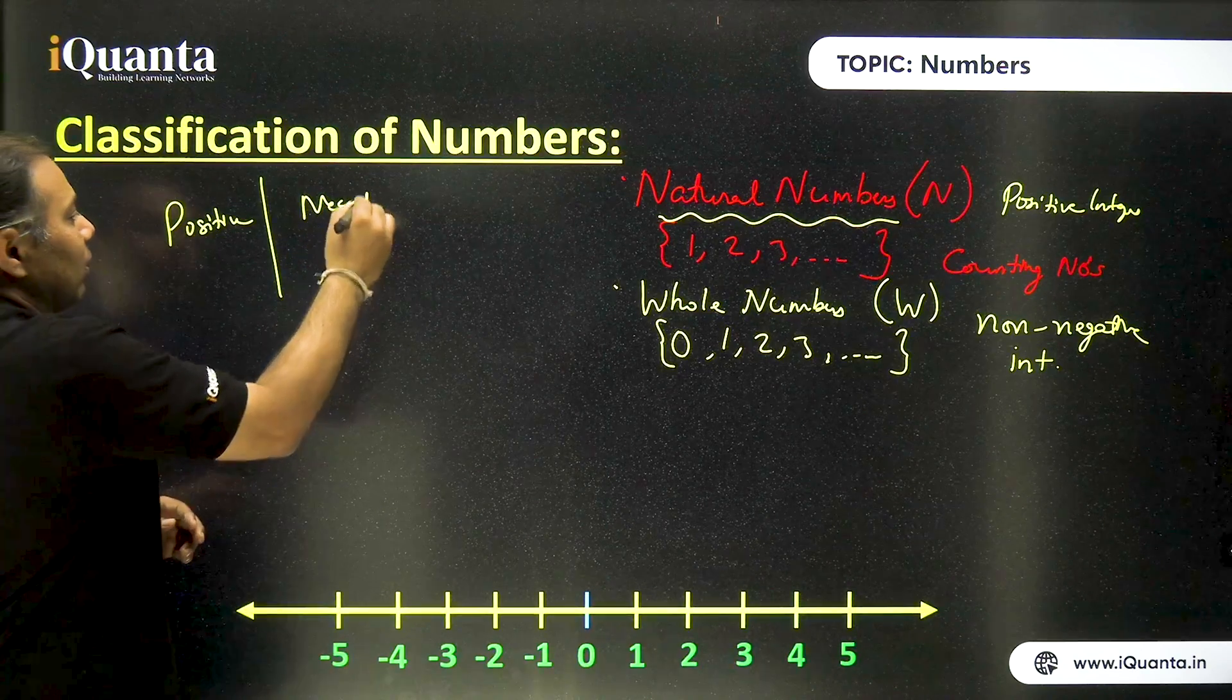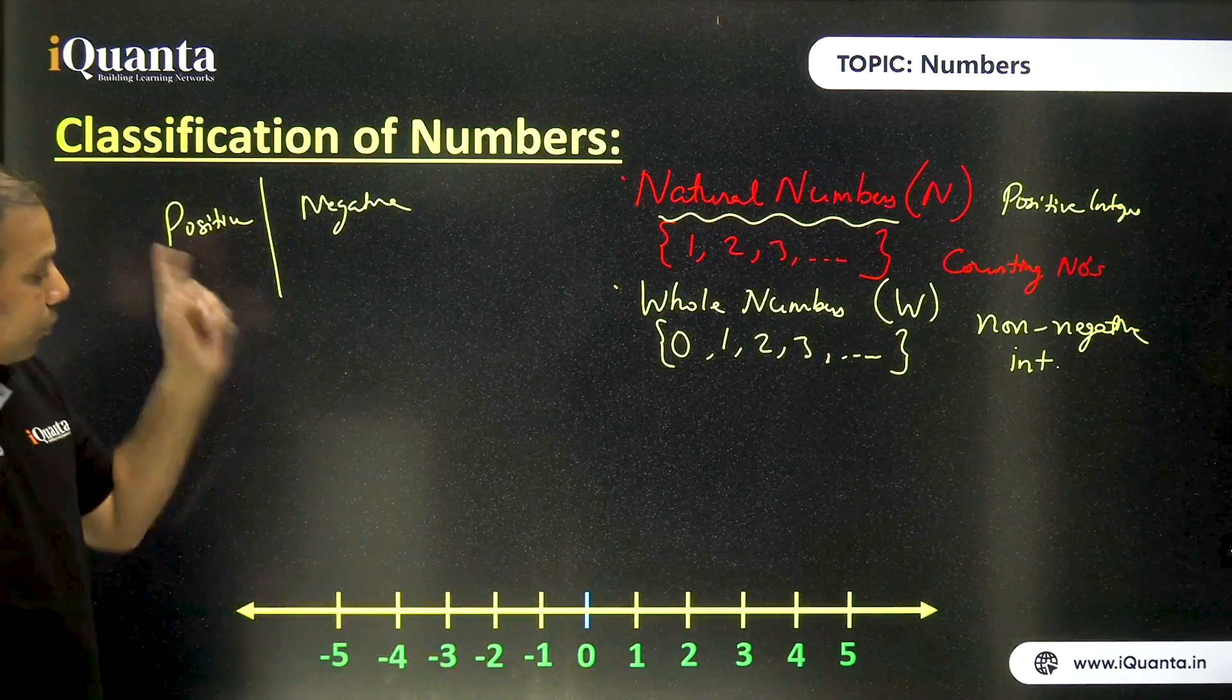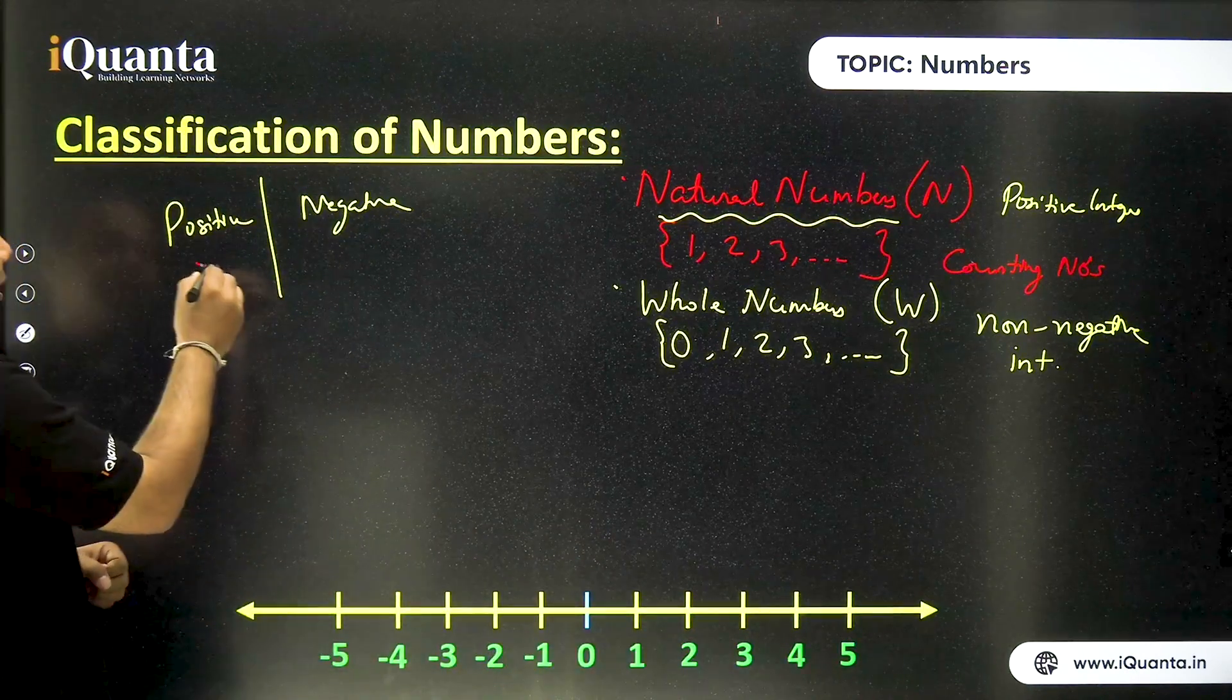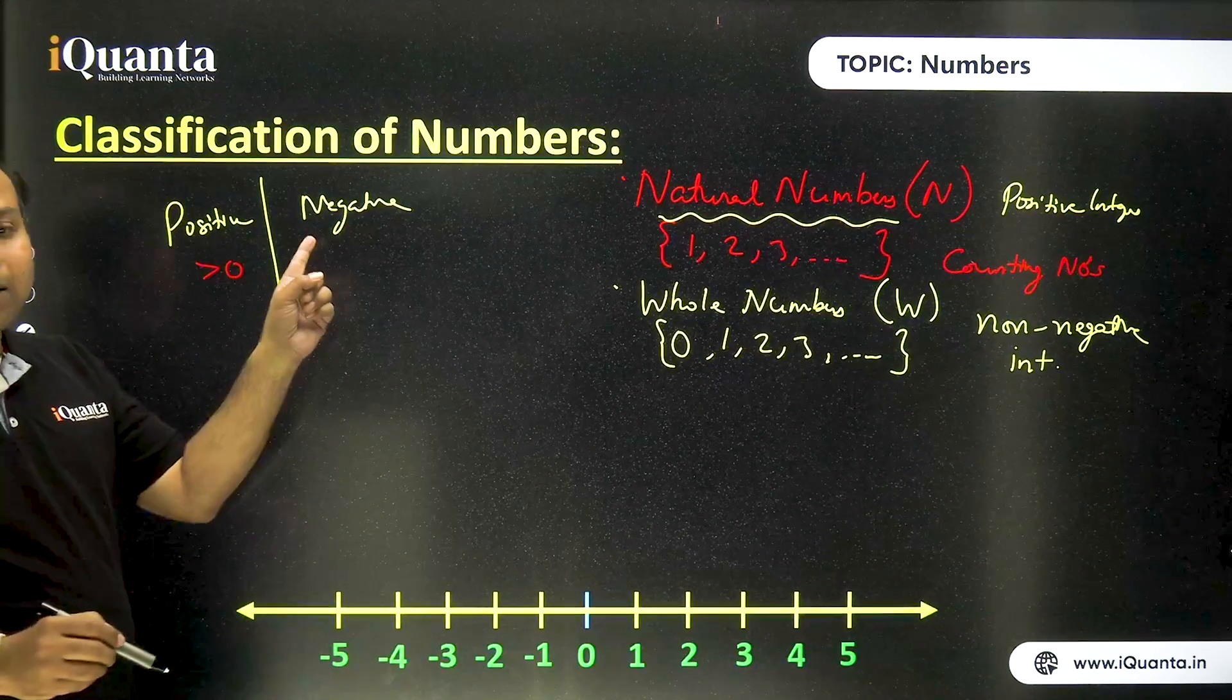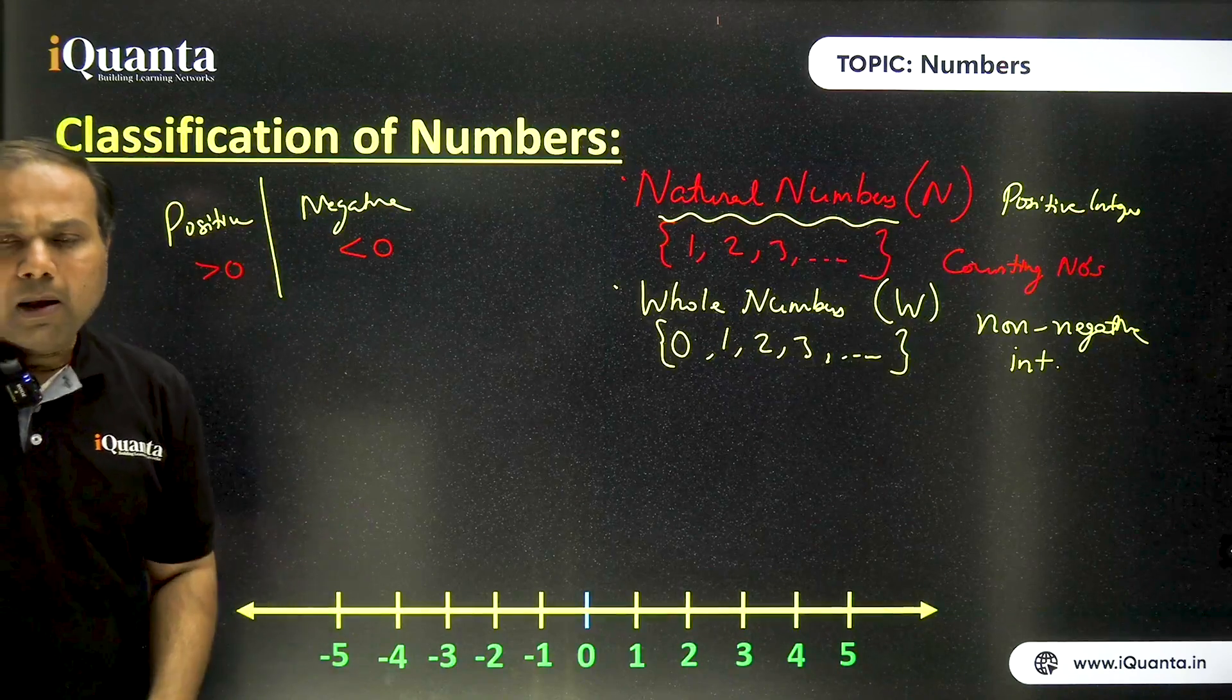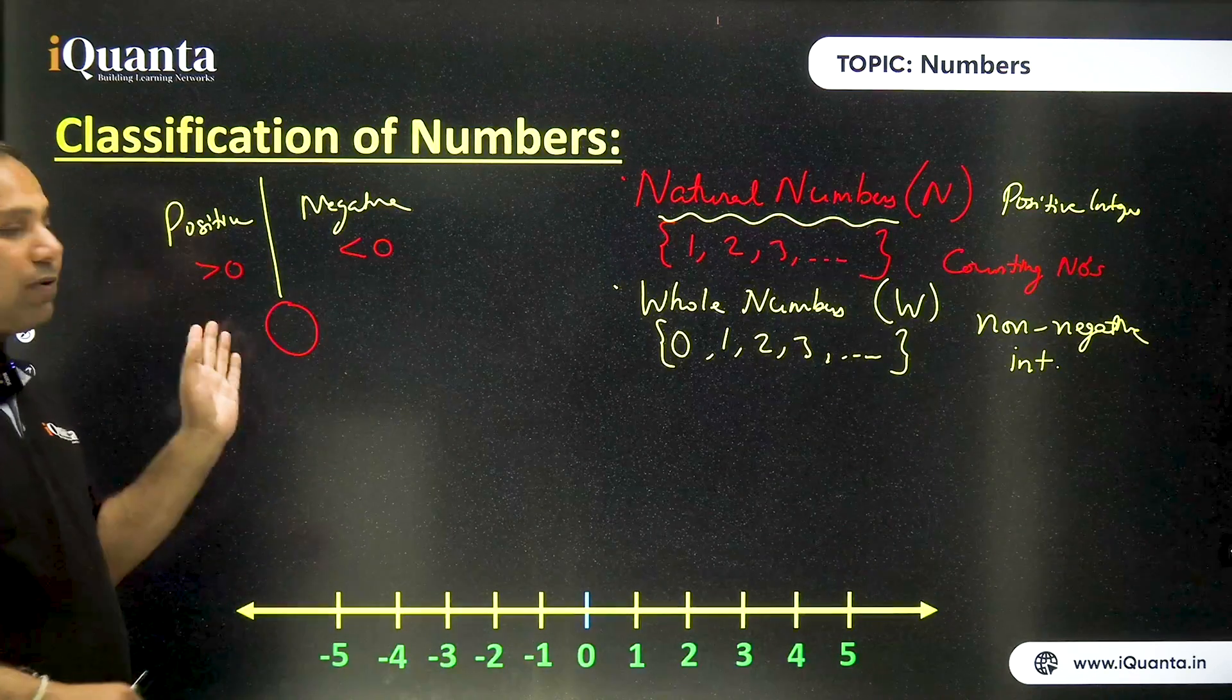So basically, we need to understand what is the meaning of positive and negative. So when I'm saying positive and negative, so positive means the numbers which are on the right side of zero. That means the numbers which are more than zero or greater than zero. So the numbers which are greater than zero, they are called positive. Similarly, the numbers which are on the left side of zero on the number line, that is which are less than zero, they are termed as negative. But again, what about zero? So zero is that deciding factor. Zero is neither positive nor negative.